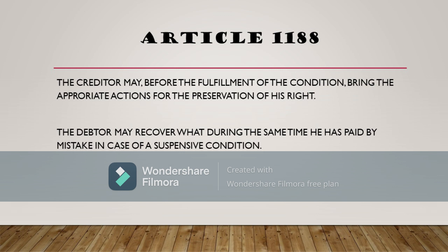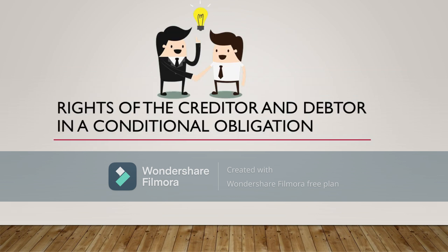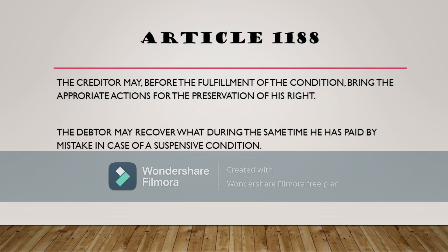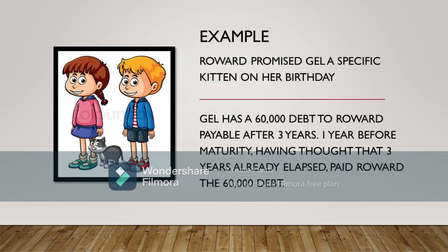Now let's discuss Article 1188. Article 1188 is something to do with the rights of the creditor and debtor in a conditional obligation. To understand fully Article 1188, let's have a simple example. Roward promised Jill a specific kitten on her birthday. On this case, Jill's birthday is not yet done — her birthday is going to happen, hindi pa siya nangyayari.